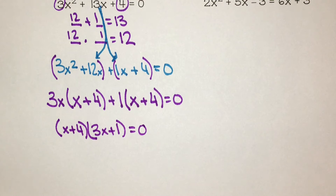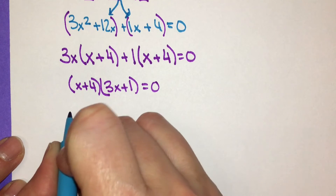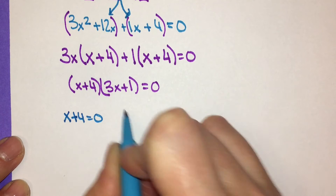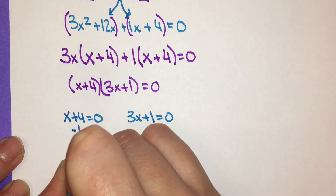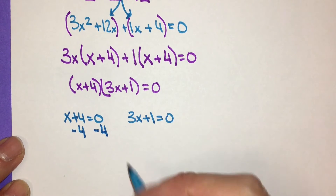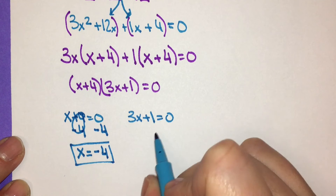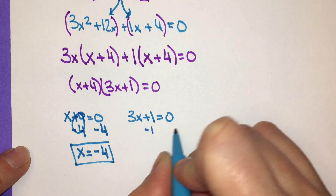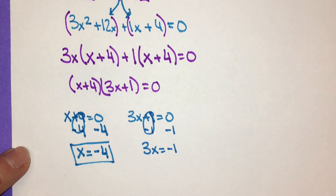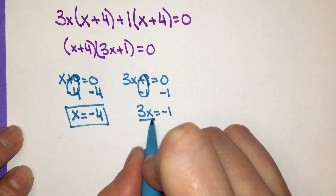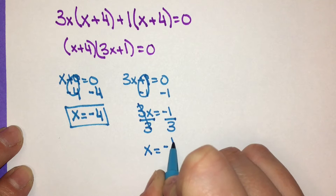Now we can solve for x. We set each parenthesis individually equal to 0: x plus 4 equals 0, and 3x plus 1 equals 0. For x plus 4, I subtract 4 from both sides — 4 minus 4 is 0 — leaving x equals negative 4. For 3x plus 1, I subtract 1 from both sides — 1 minus 1 is 0 — leaving 3x equals negative 1. x is being multiplied by 3, so I divide both sides by 3, giving x equals negative 1 third. Those are my two answers.